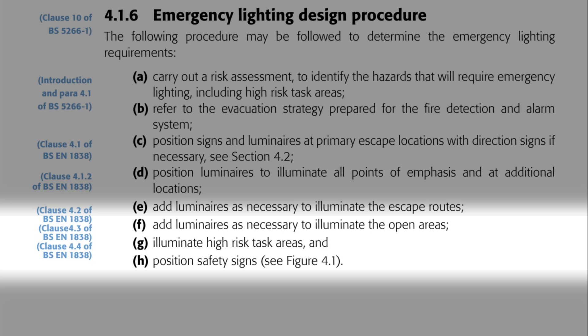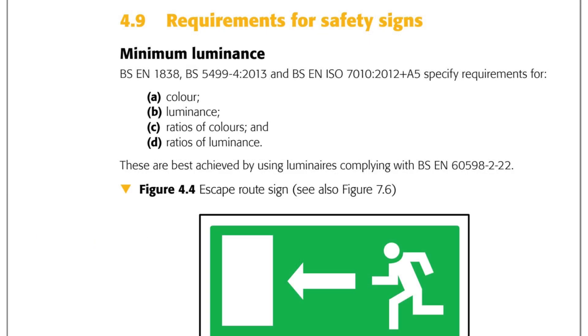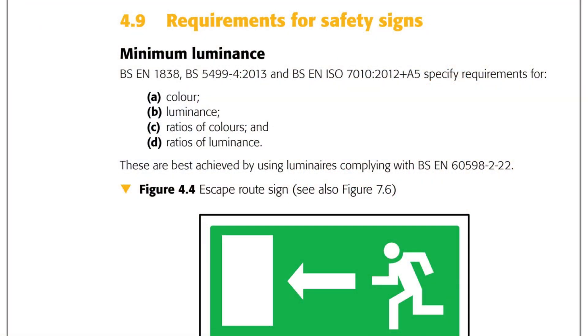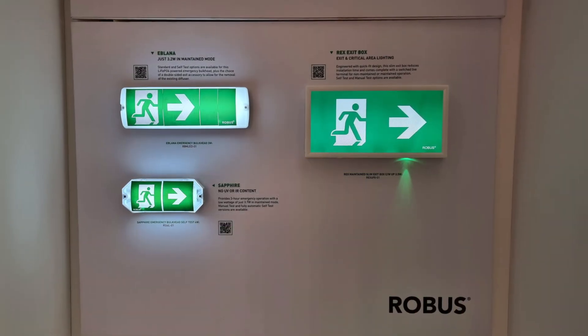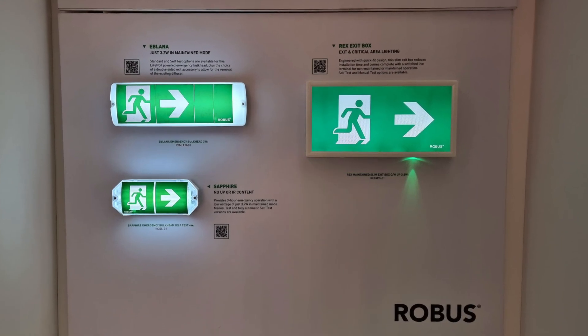This brings us back to signage, showing just how important this subject is. Subheading 4.9 gives requirements for safety signs including colour, luminance, ratios of colours and ratios of luminance. Some of these are outside the typical electrician's skill set — how many of us are familiar with RAL codes and colour theory? However, we find the reassurance that if we install emergency light fittings complying with BS EN 60598-2-22, like these ones from Robus, then we should meet those requirements.